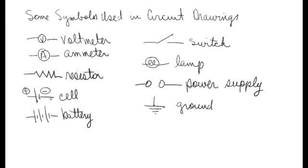This symbol is a cell, and a cell is nothing more than a device that changes chemical energy into electrical energy. As you see, it has a long side and a short side, the long side being the positive pole, and the short one being negative.